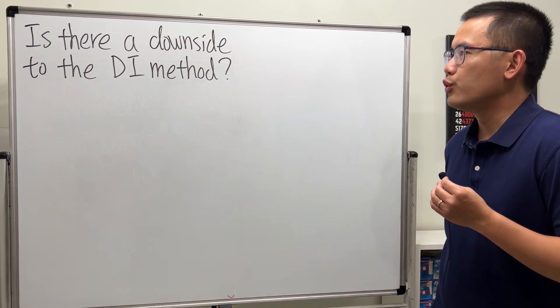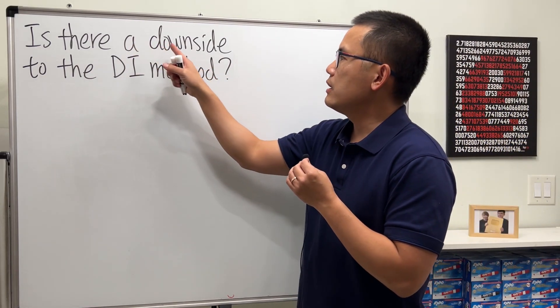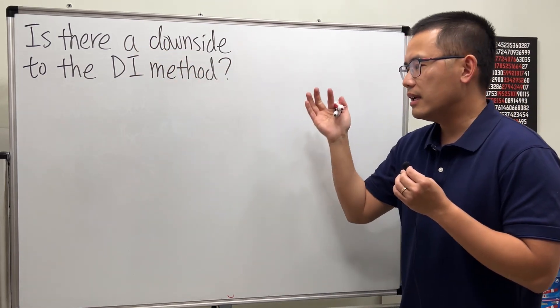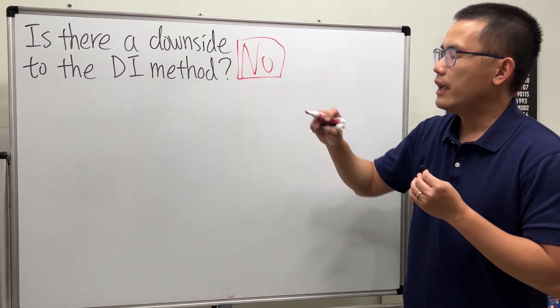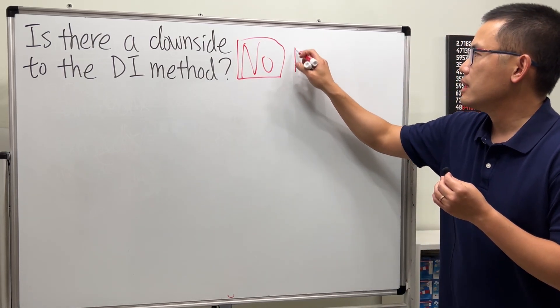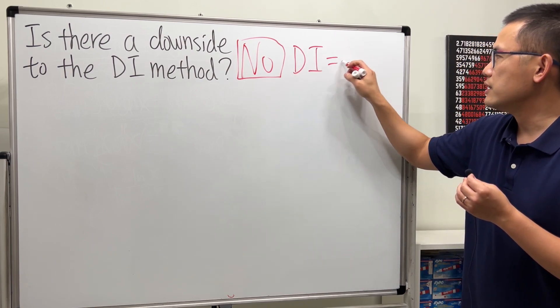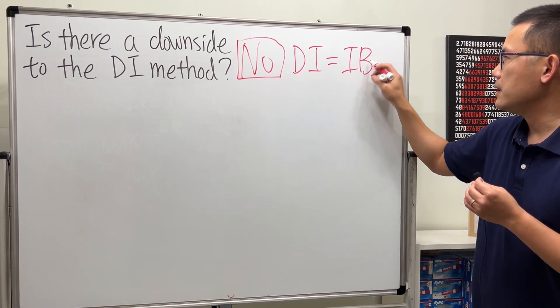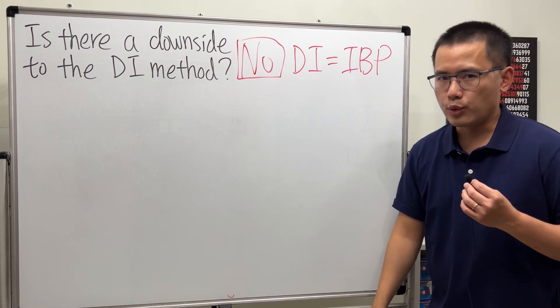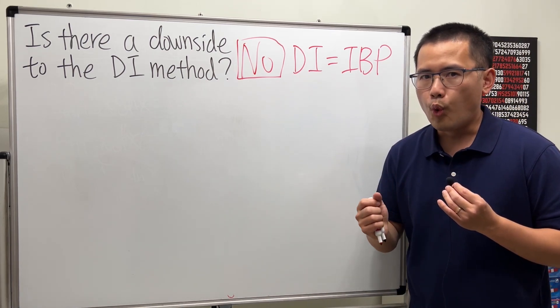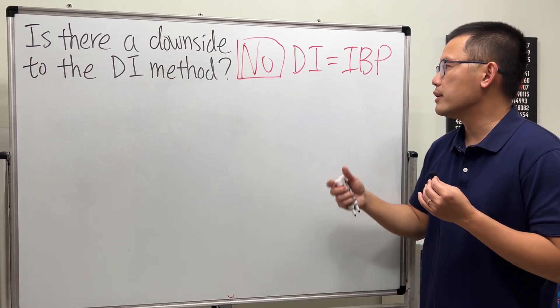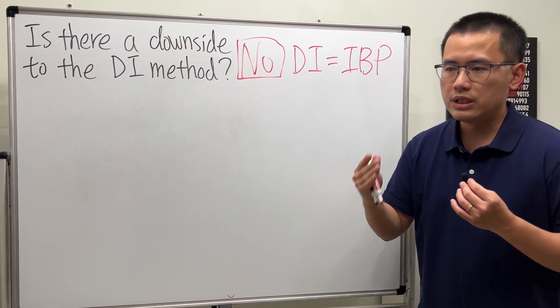I will tell you this right away. Is there a downside to the DI method? The answer to this right here is no. And the reason is because the DI method is really the same as IBP, the traditional integration by parts. This right here is just an easier way to organize your work in comparison to the traditional UDV format.